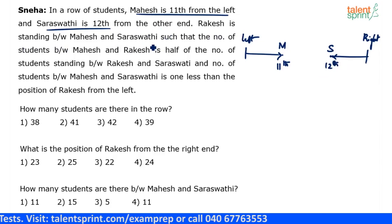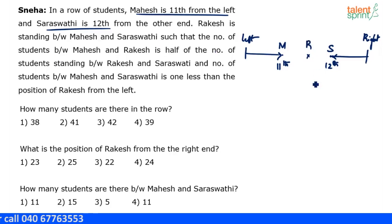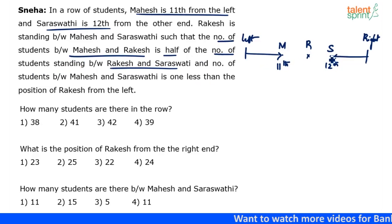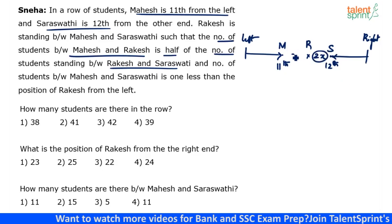Rakesh is standing between Mahesh and Saraswati. Let's assume this is Rakesh's position. He is standing between Mahesh and Saraswati such that the number of students between Mahesh and Rakesh is half the number of students between Rakesh and Saraswati. Let us assume the number of students between Rakesh and Saraswati is 2x. Then the number of students between Mahesh and Rakesh should be x.